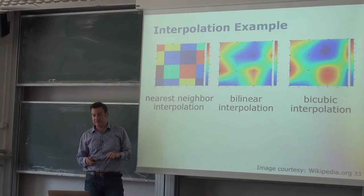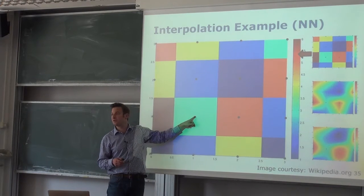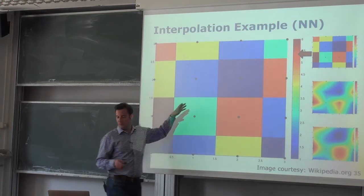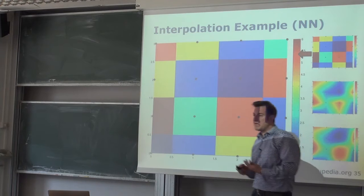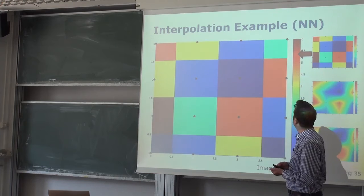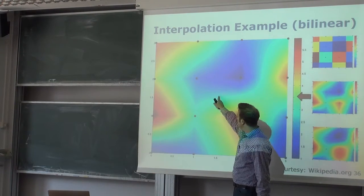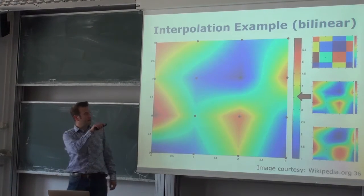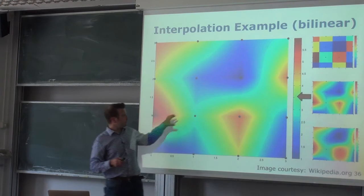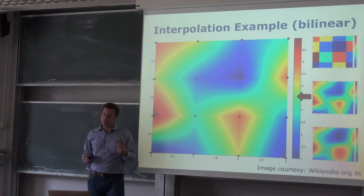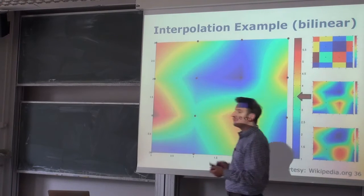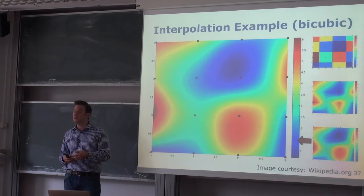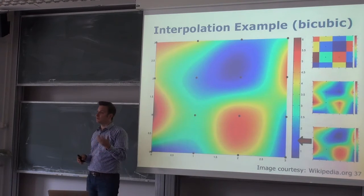With nearest neighbor assignment, every pixel closest to a grid point gets that color — which is obviously not a very smooth or realistic image. With bilinear interpolation, for any pixel in between, we look at the four neighbors and do interpolation in x as well as in y to obtain the corresponding color value. We can improve further by using a polynomial of order three — bicubic interpolation — taking into account more than those four neighbors, giving a higher quality estimate of the color.